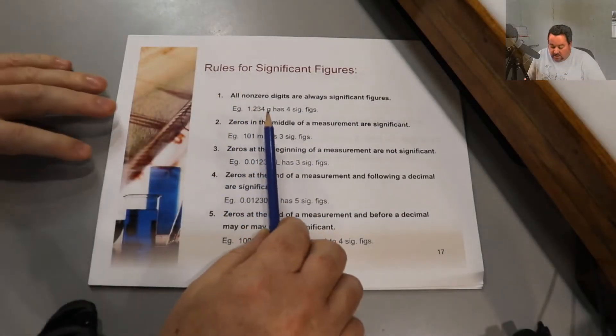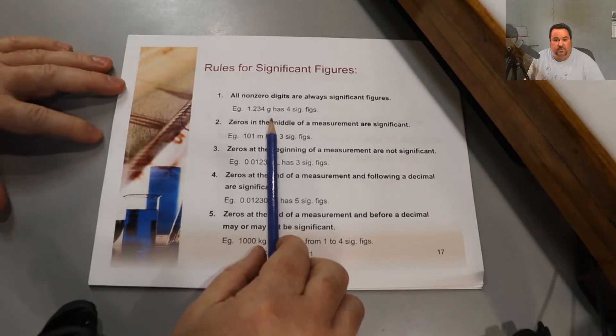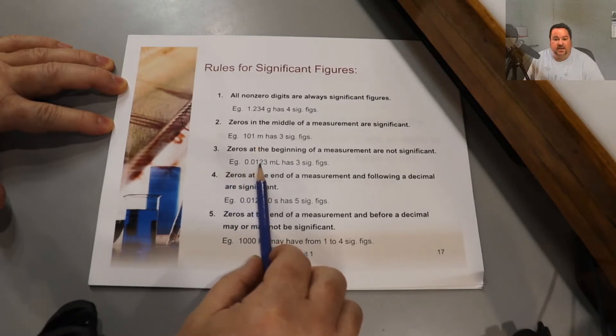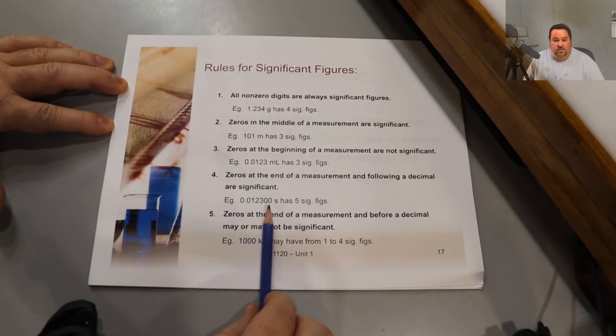First of all, any non-zero digit is always a sig fig. Zeros can be a bit of a problem though. Zeros in the middle of a number are sig figs. Zeros at the beginning are not. And zeros at the end of a measurement are sig figs as long as they are to the right of the decimal. Zeros that are to the right of the number but before the decimal can be a problem. They may or may not be sig figs.